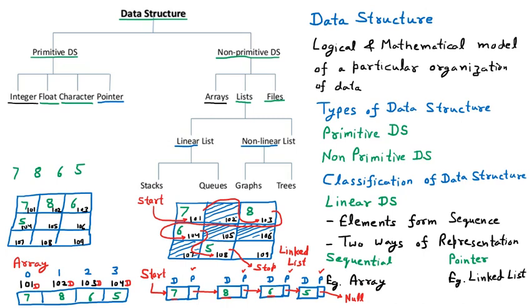There are two further categories of the sequential list. Just like in the sequential data structure we are having stack and queues, so now we are discussing the stack and queue in detail.